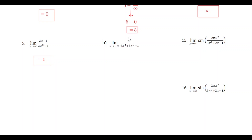Number ten is just another rational function with a fifth degree polynomial on top and a fourth degree polynomial on the bottom — no exponential or logarithmic terms. Since the degree on top is bigger, it grows without bound. As x goes to the right it approaches positive infinity, but as x goes to the left — in this case x approaches negative infinity — the limit equals negative infinity.